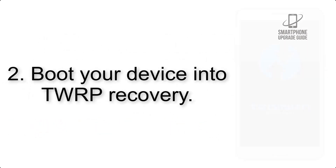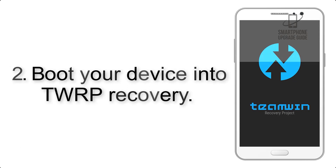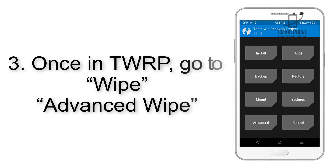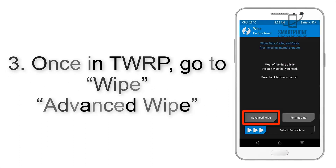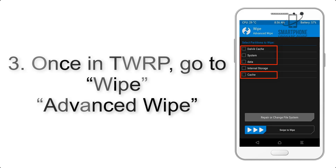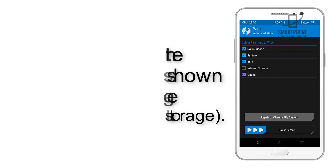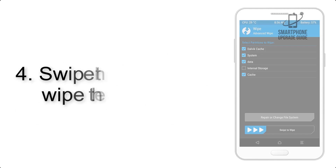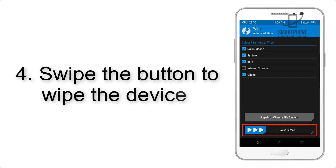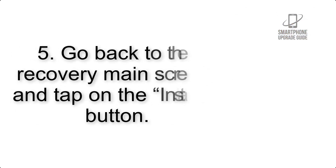Step 2: Boot your device into TWRP recovery. Once in TWRP, click on Advanced Wipe and select the checkboxes as shown in the image, excluding internal storage. Step 4: Swipe the button to wipe the device.